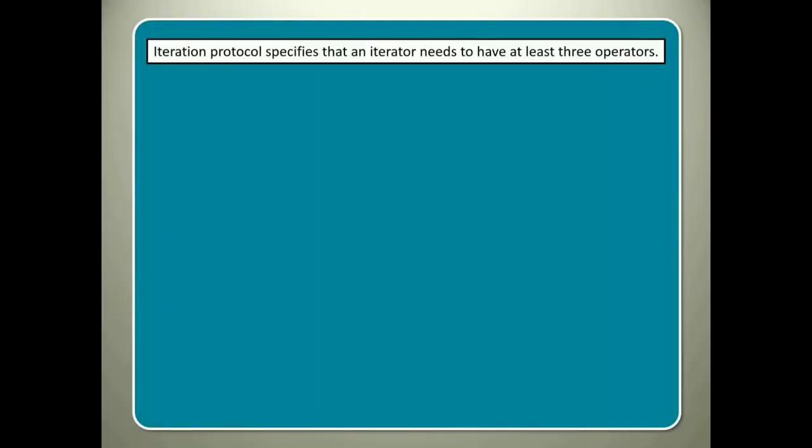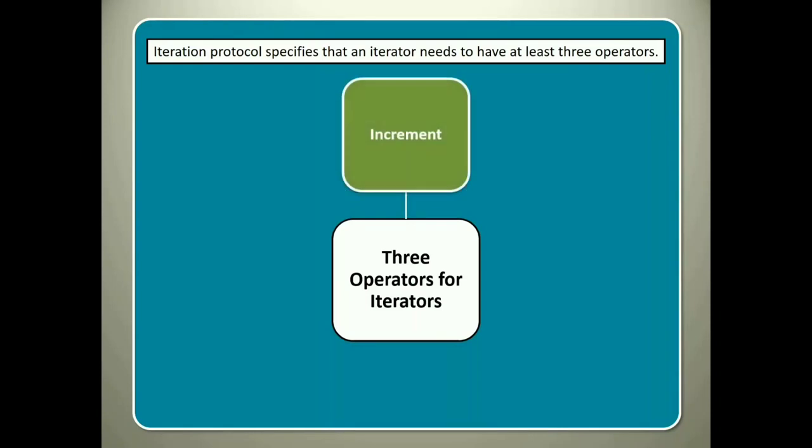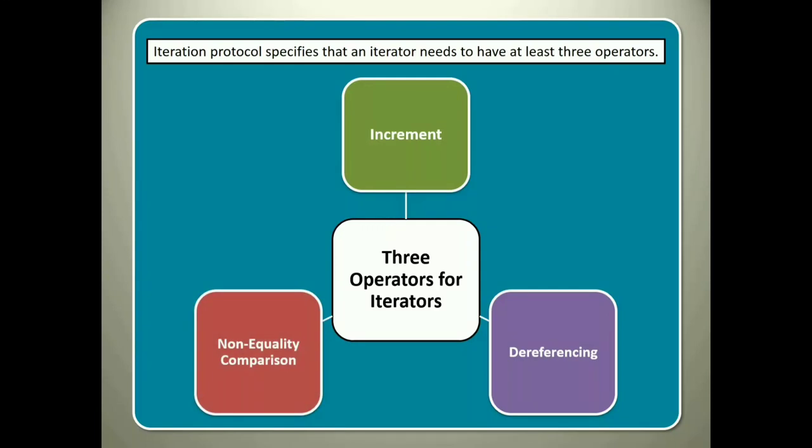Iteration protocol specifies that an iterator needs to have at least three operators: increment, dereferencing and non-equality comparison. In this chapter, we will not discuss these in detail. Instead, we will learn about generators that will help you to write user-defined iterator.